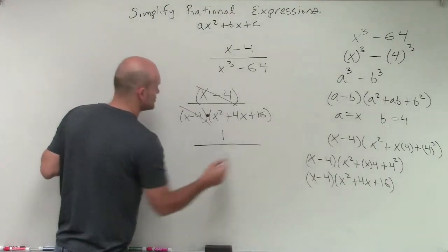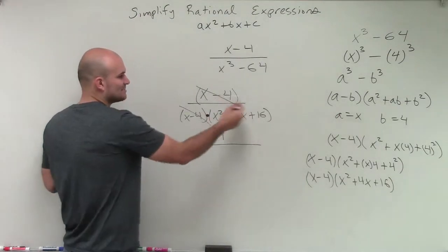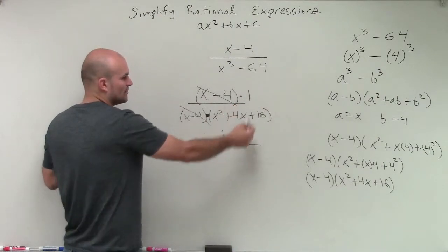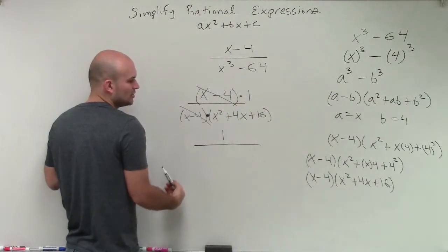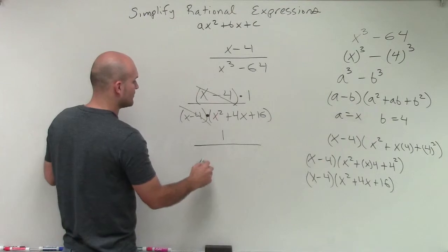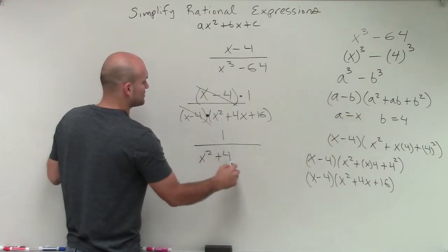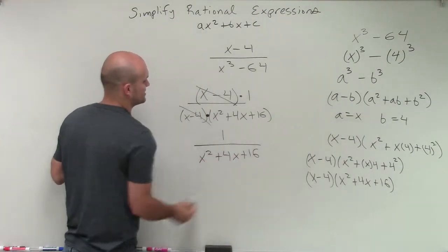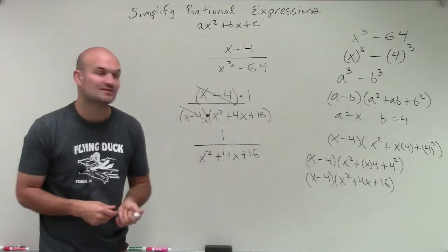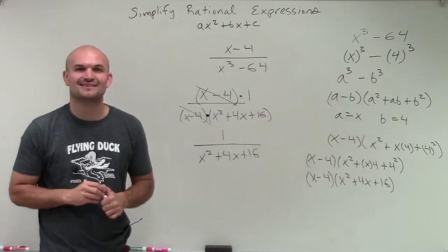So therefore, I'm left with a final rational expression of 1 because x minus 4, it's still going to be times 1 where we could break this up across our multiplication, is 1 over x squared plus 4x plus 16. And that's going to be your final simplified rational expression. Thanks.